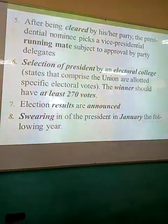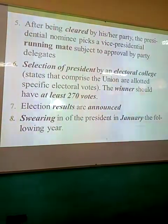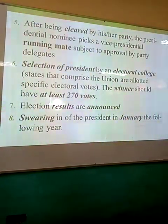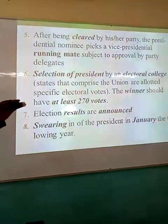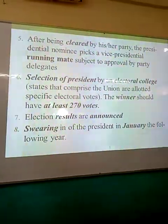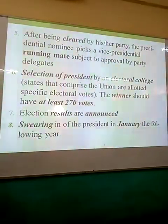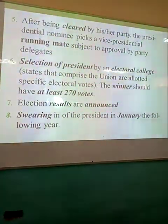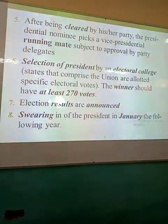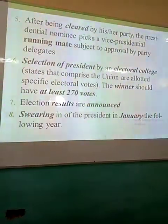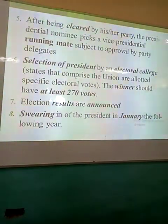A presidential candidate must win more than 270 votes out of the total electoral college votes to be declared winner, which means the popular vote may not always be decisive — it is the college vote that matters. Electoral results are then announced and the president is sworn in in January the following year.